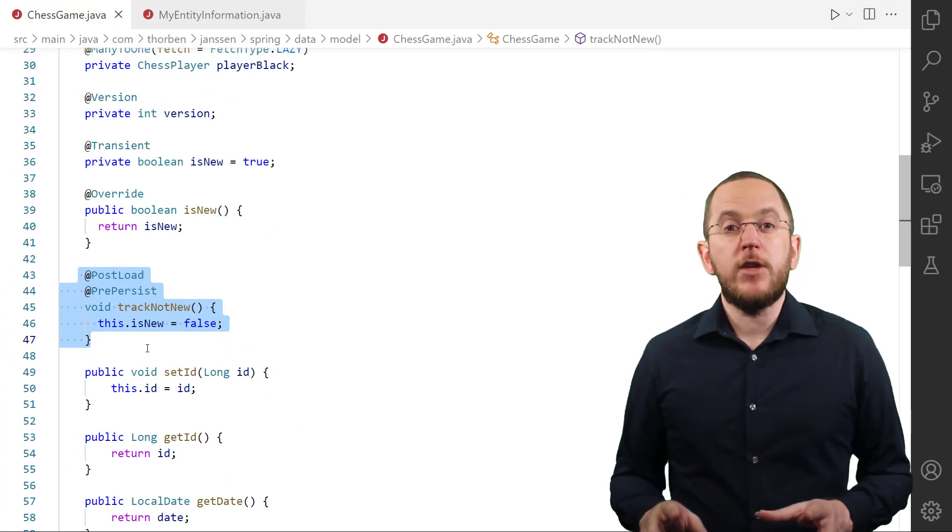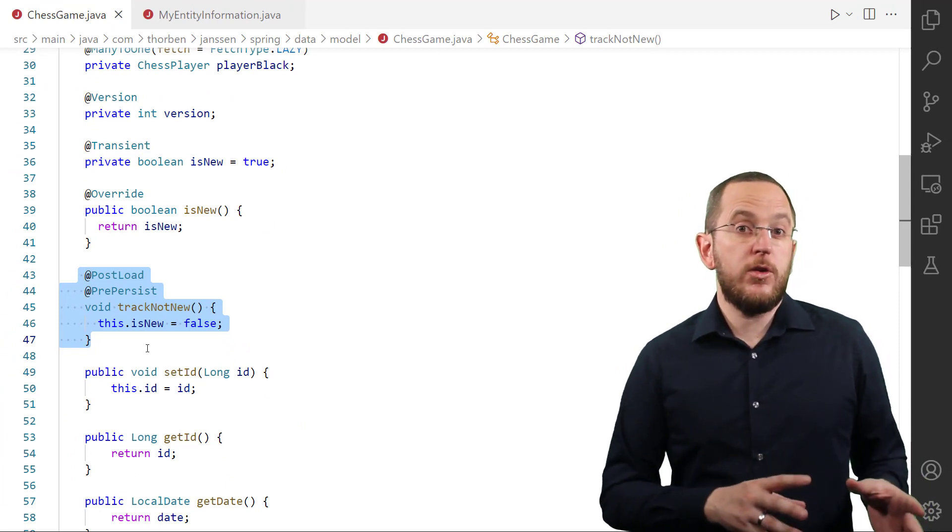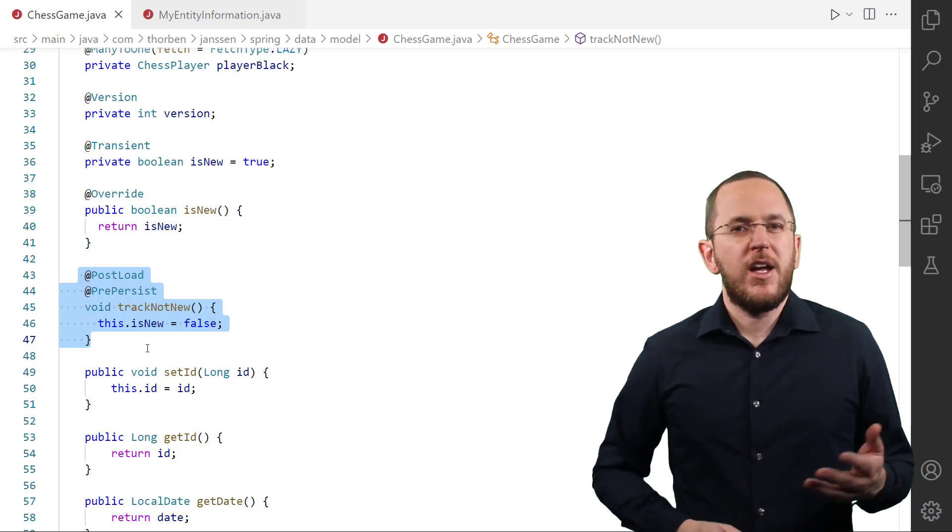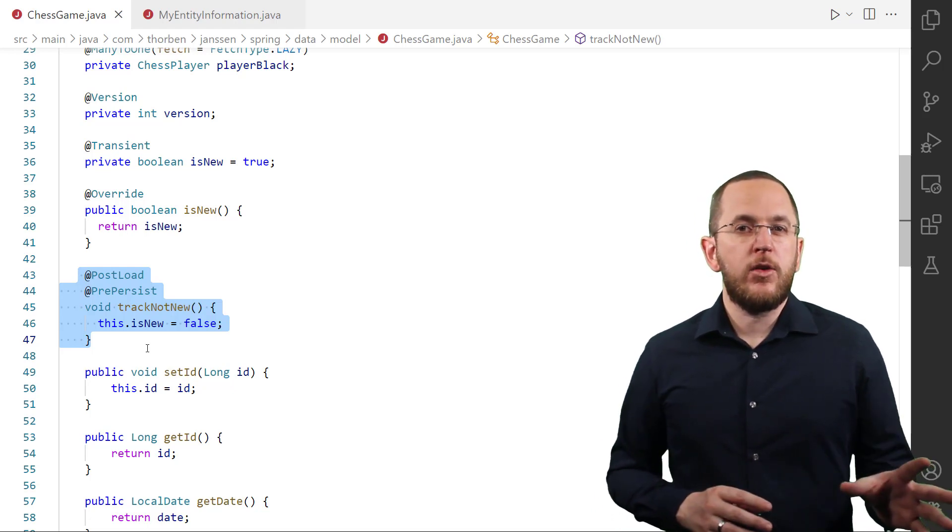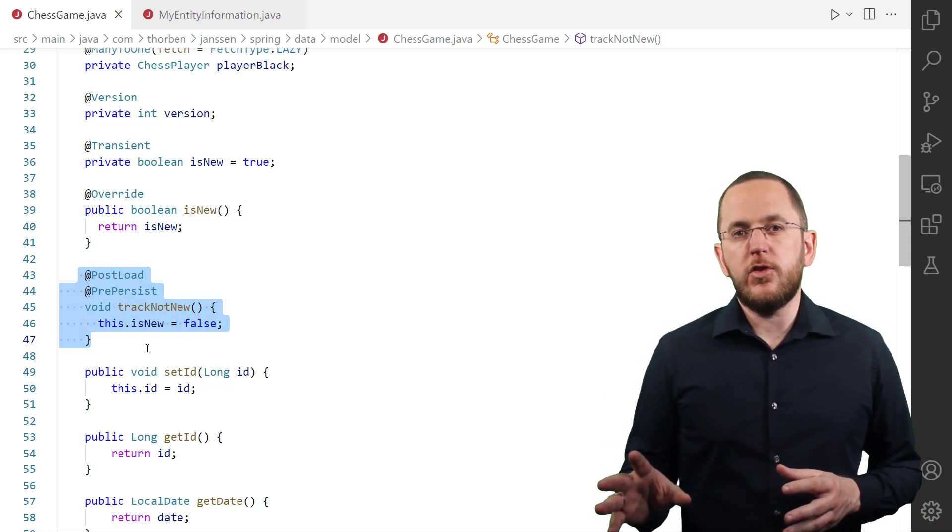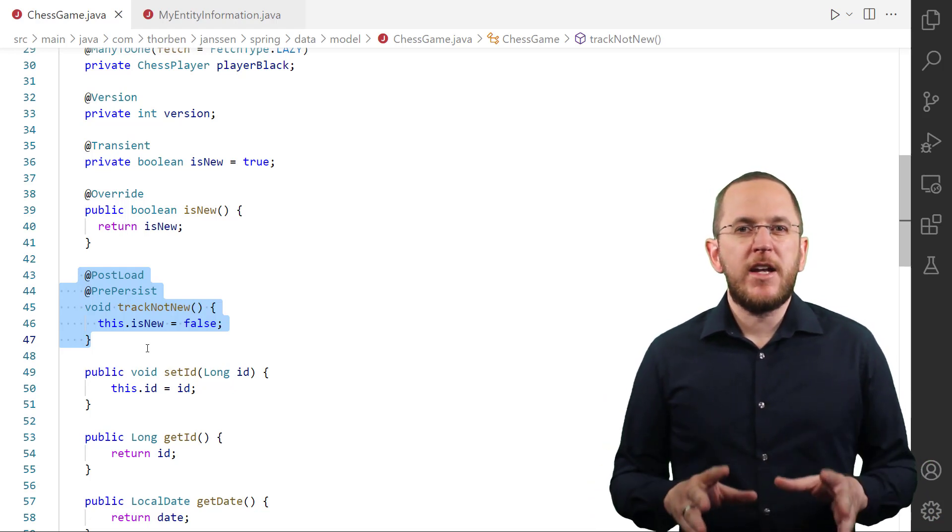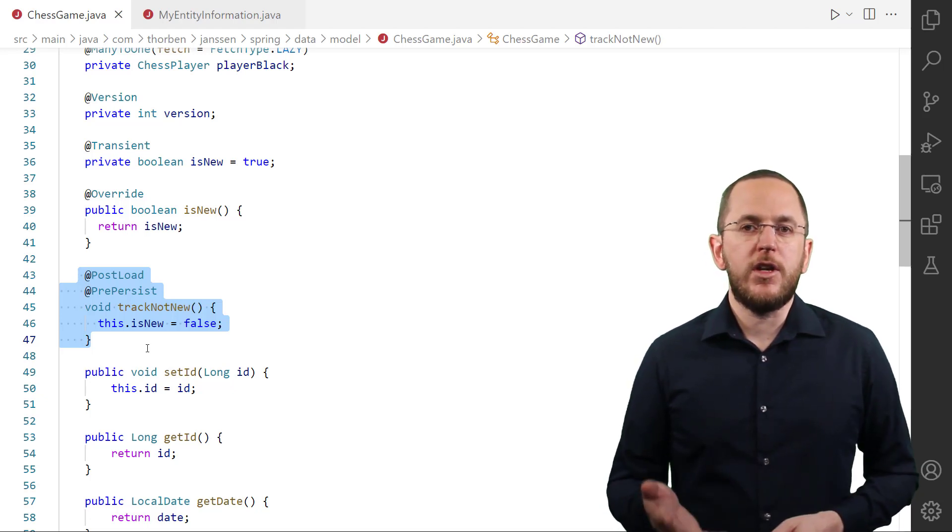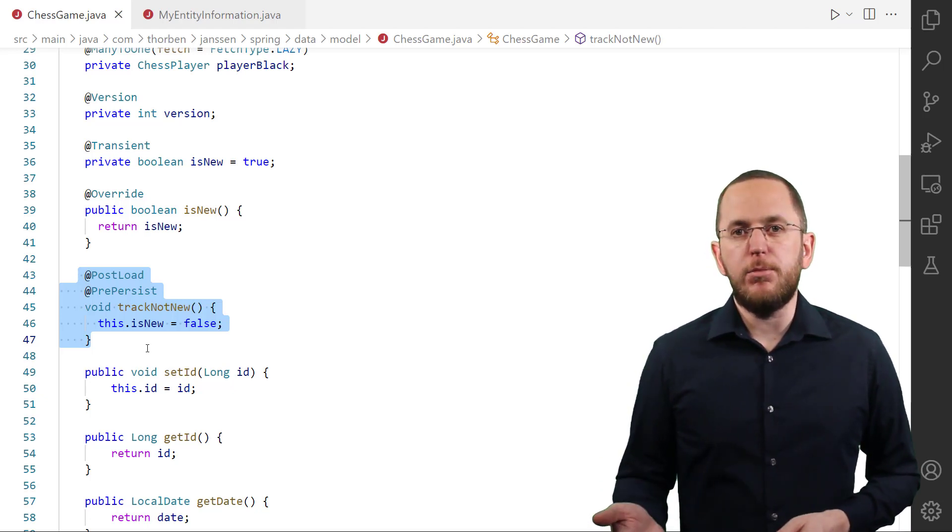Implementing the EntityInformation interface is not a commonly used or recommended approach to customize the state detection algorithm. Most teams either rely on the default algorithm or let the entity classes implement the persistable interface. Because of that, I am only explaining this approach on a theoretical level and recommend using a mapped superclass that implements the persistable interface.